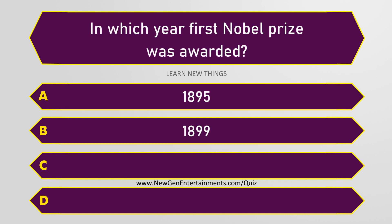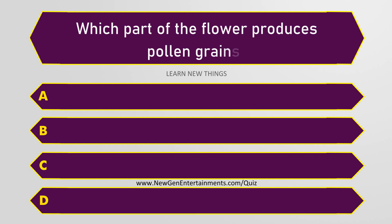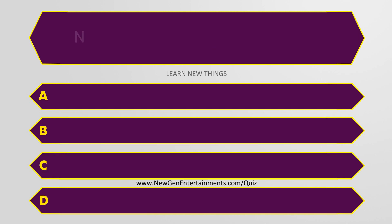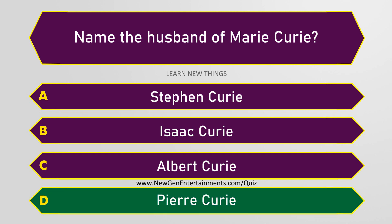In which year was the first Nobel Prize awarded? 1901. Which part of the flower produces pollen grains? Anther. Name the husband of Marie Curie. Pierre Curie.